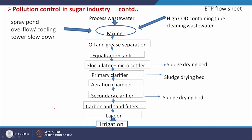The ETP flow sheet conventionally mixes the three wastewater streams and follows treatment steps including oil and grit separation, equalization tank, flocculation and micro settler, primary clarifier, aeration chamber, secondary clarifier, carbon and sand filter, and lagoon for storage before irrigation. However, this conventional method may not give superior ETP performance.